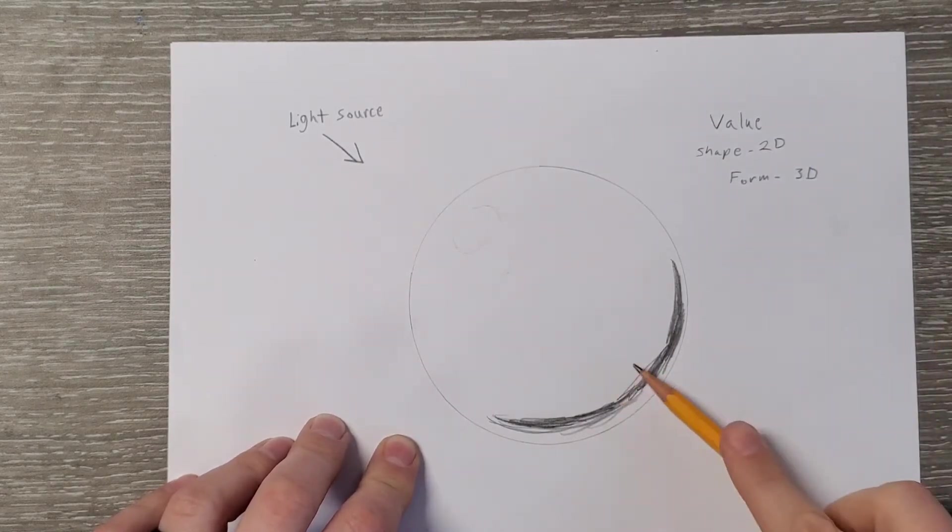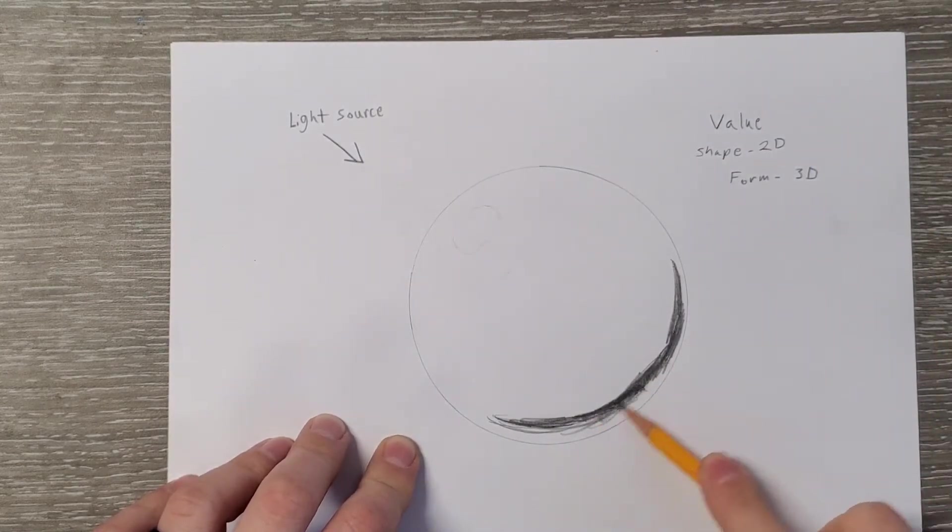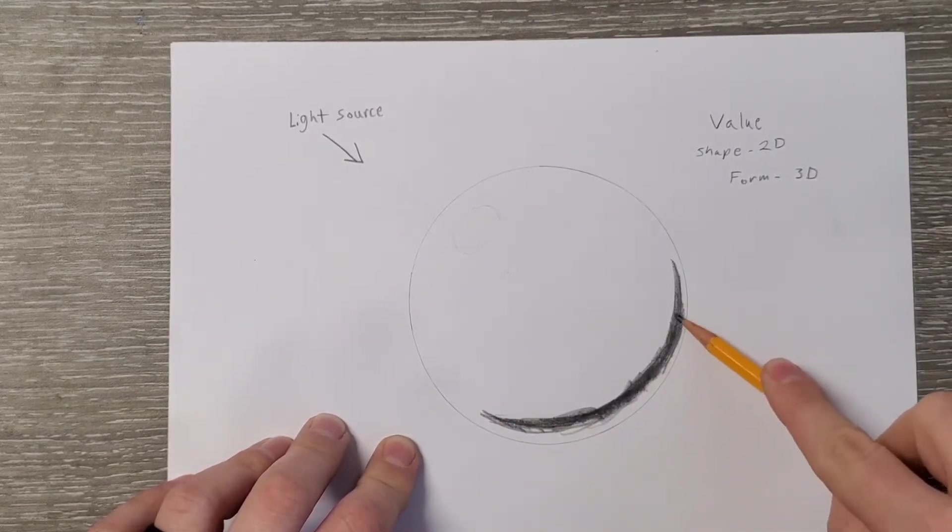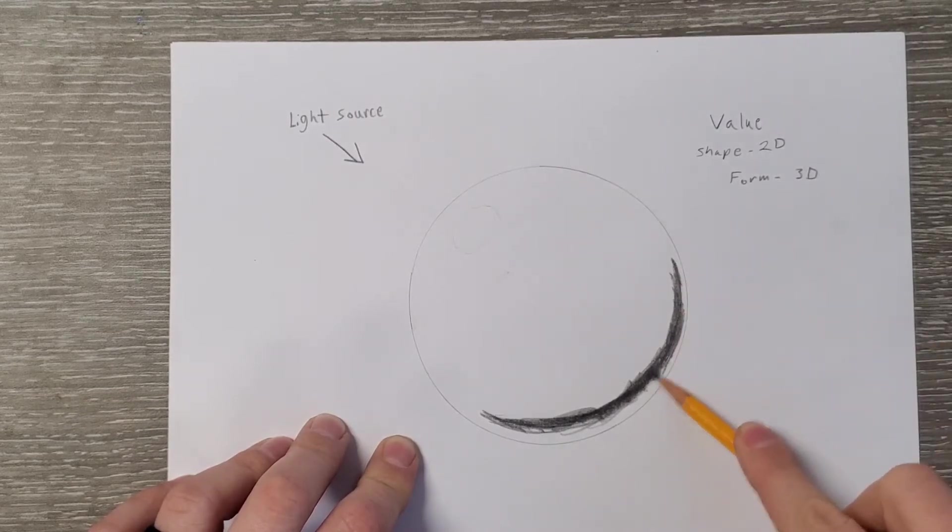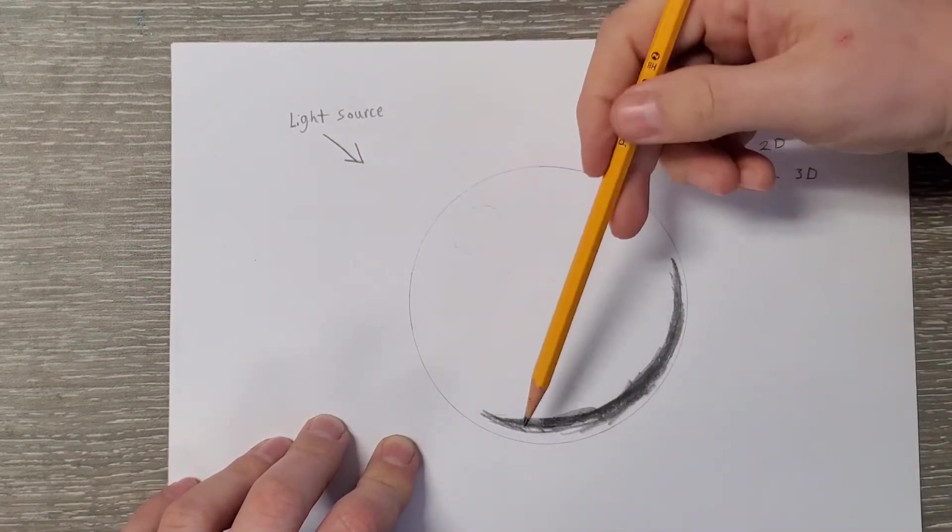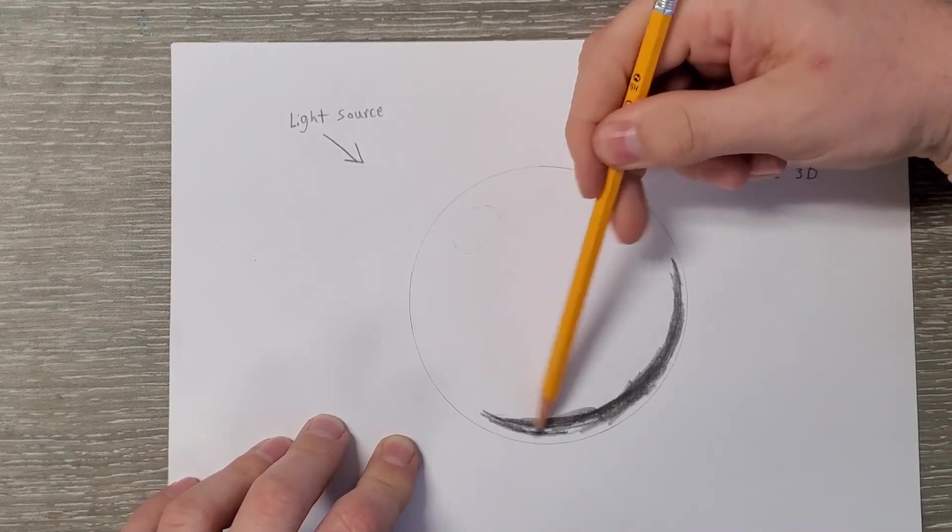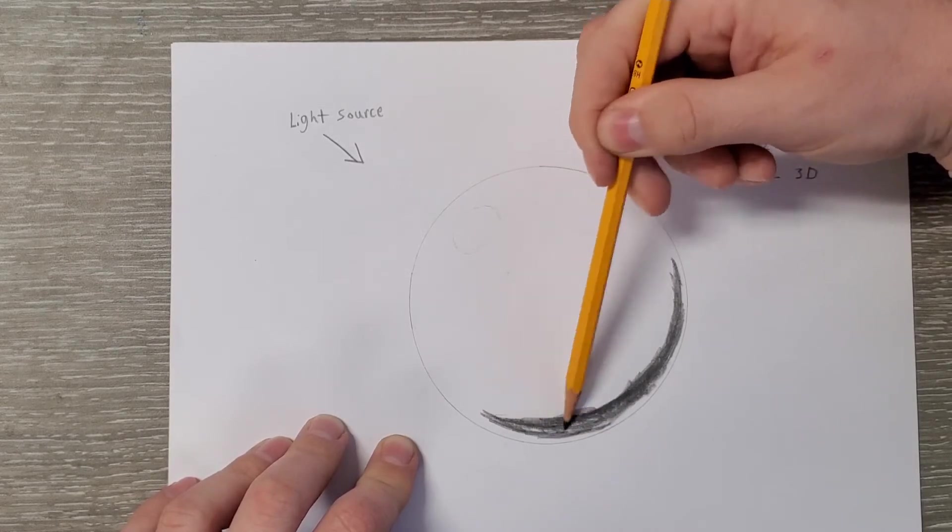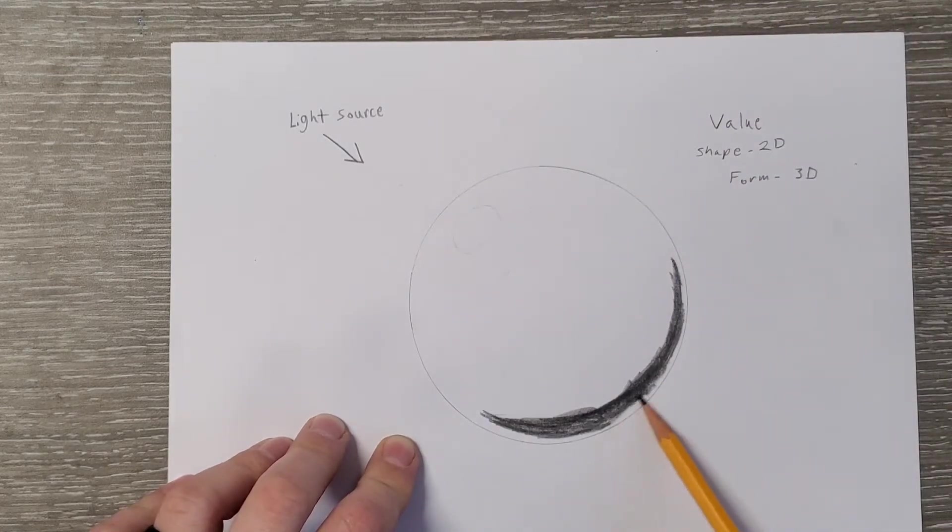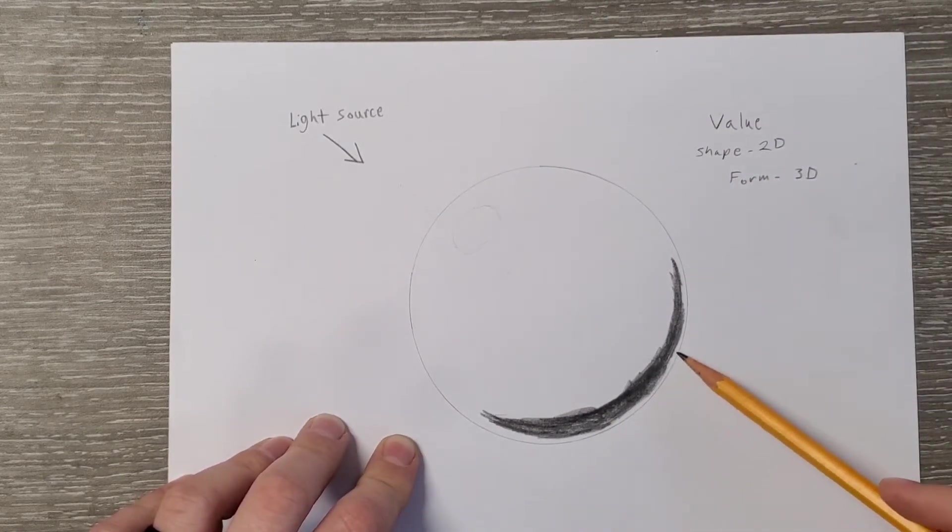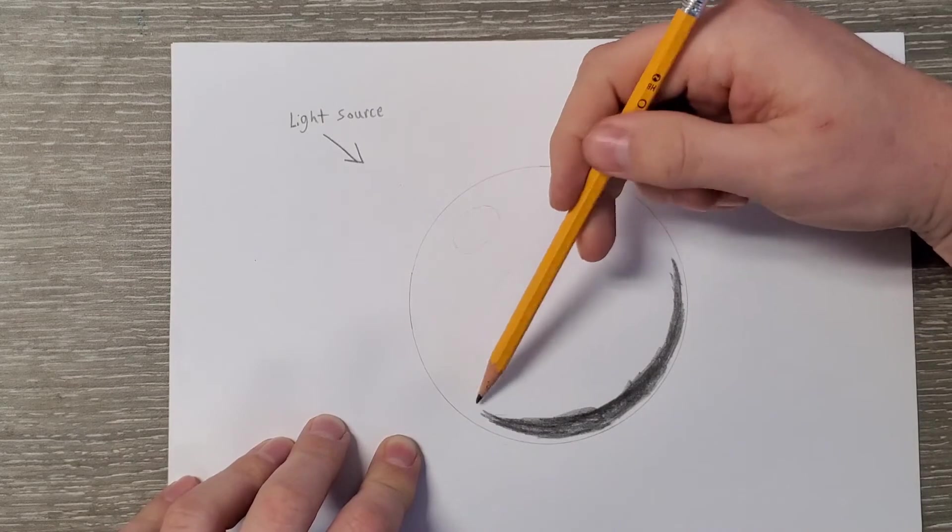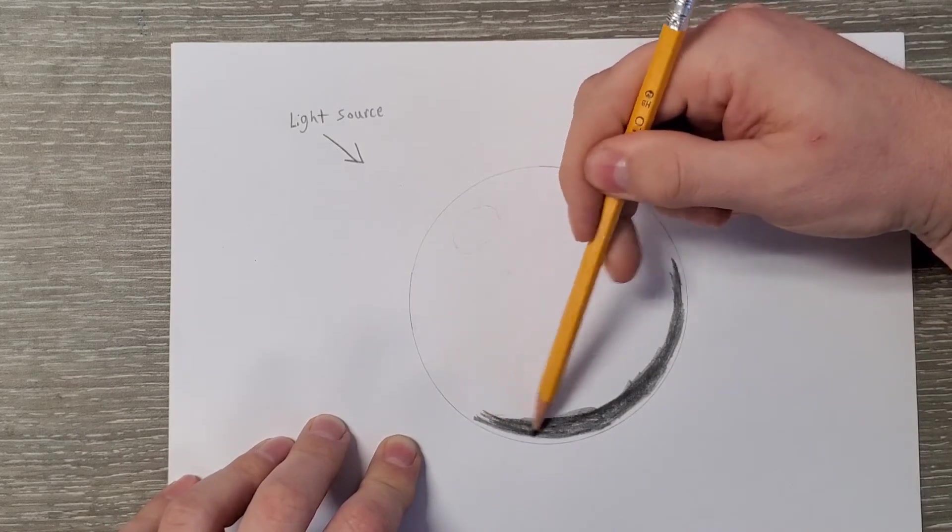Alright, so we're going to have a shadow right here. A very rich, dark shadow. I'm going to slowly layer lead on here to get it darker and darker. If you try to get all your darkness on in one pass, what will end up happening is you will flatten out the bumps on your paper. We kind of talked about that last time. And if you ruin that tooth on your paper, then your lead is going to go on inconsistently and it's not going to be consistent with the rest of your piece. So we want unity. We don't want one part to be very smooth paper and the other part to be textured paper. That will ruin our unity.